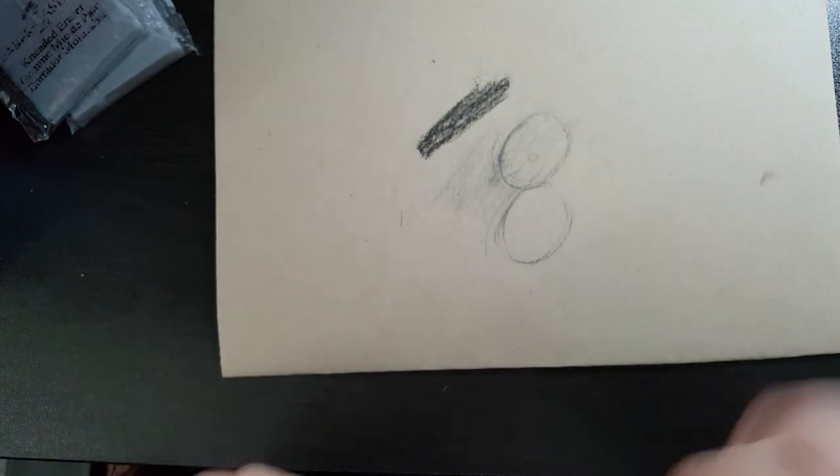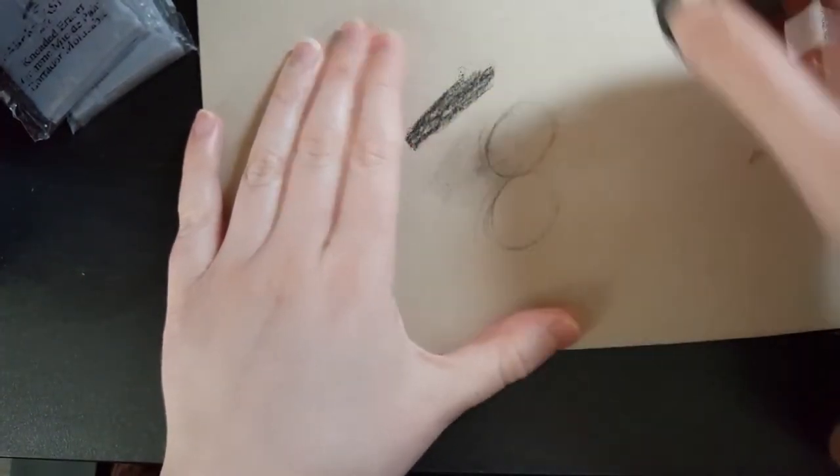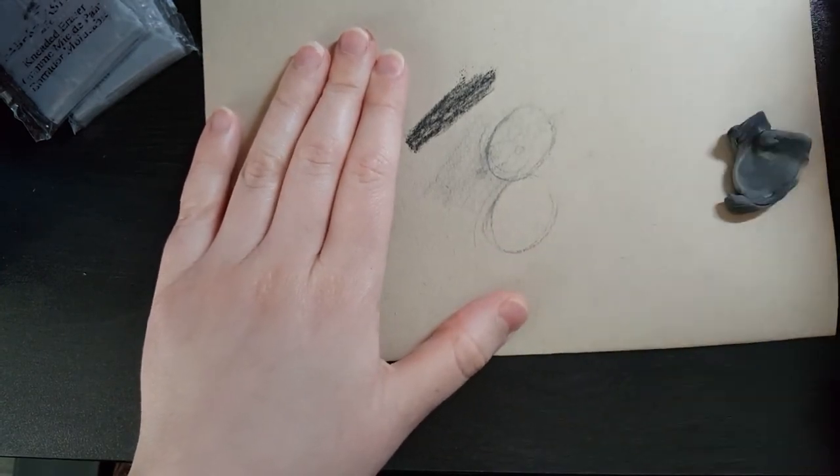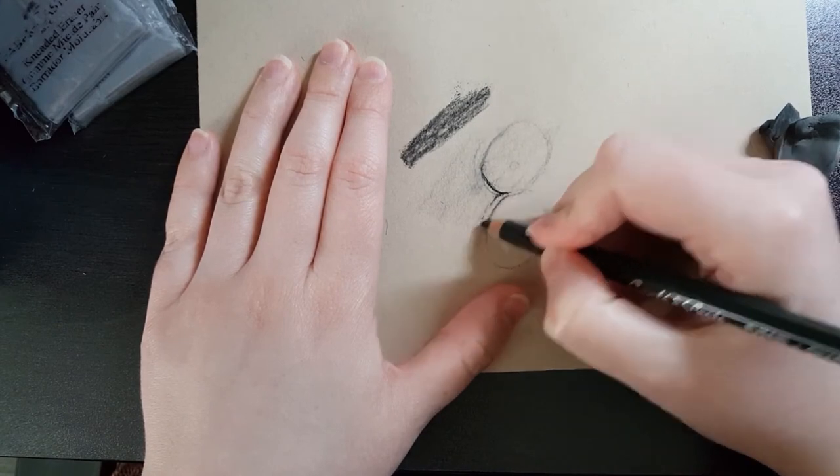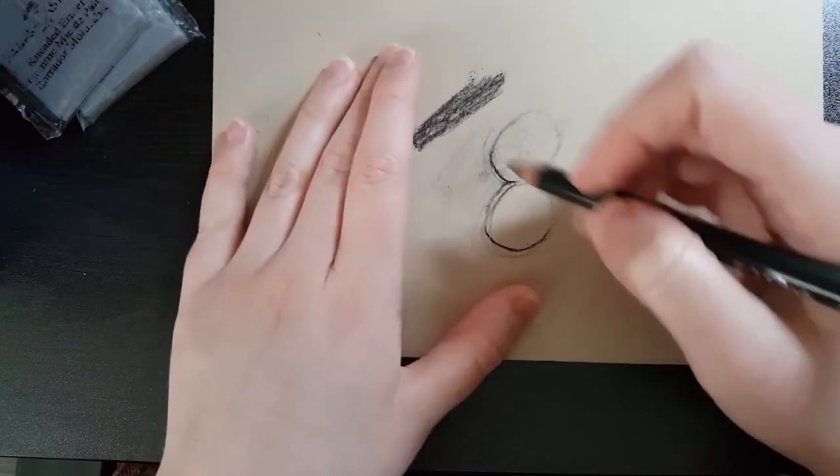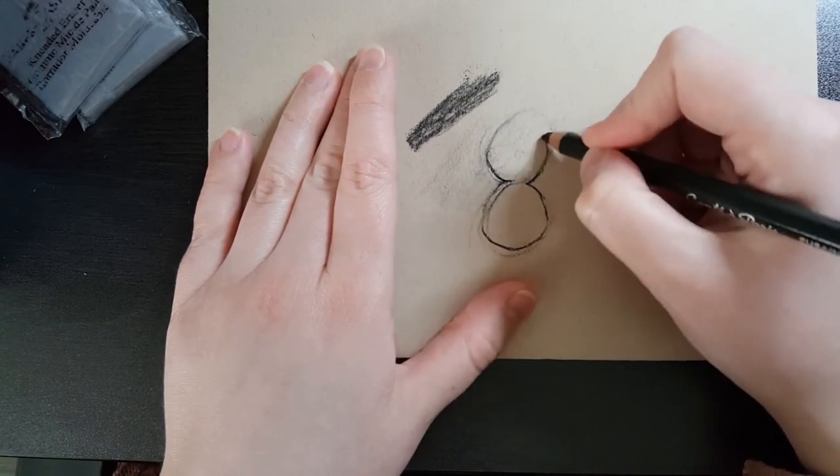What's nice is that the kneaded eraser will leave a faint amount of what you've drawn already. So that when you go over top of it next time, you can be a little bit more accurate about your line placement, but still see where you had previously drawn your lines. So it's kind of like you're able to correct your work with this.